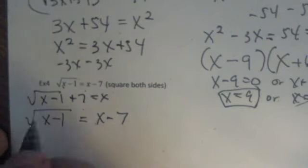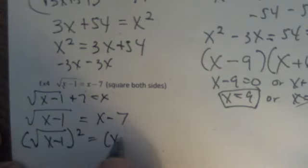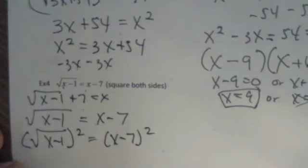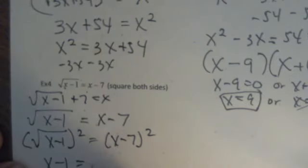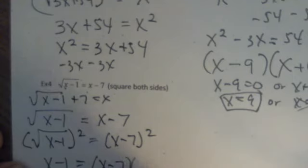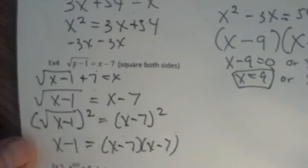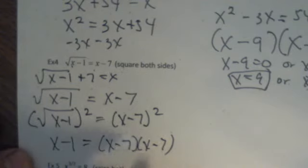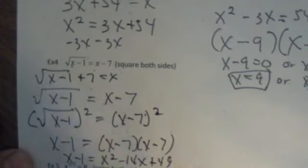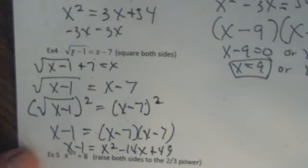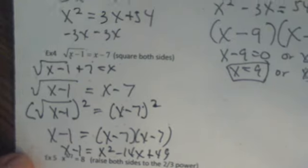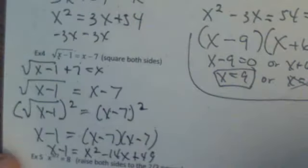So now I can square both sides. And that leaves me with x minus one. And be careful when you square something because it's x minus seven times x minus seven. If you just, again, you can't distribute the square. It doesn't work that way. So then what I end up with, if you use your FOIL method, you should get x minus one equals x squared minus 14x plus 49. I'm going to kind of separate this out here.